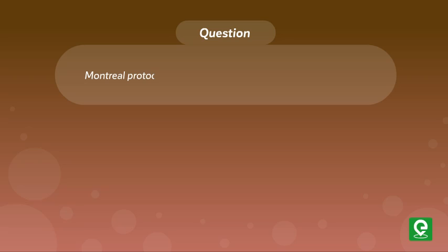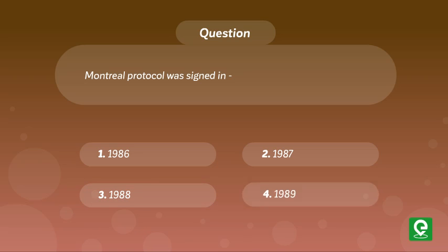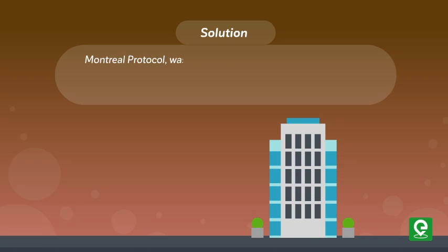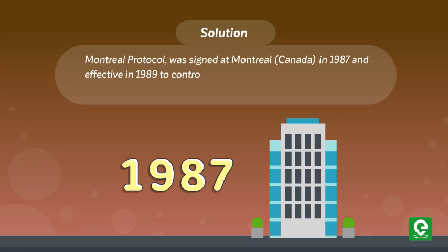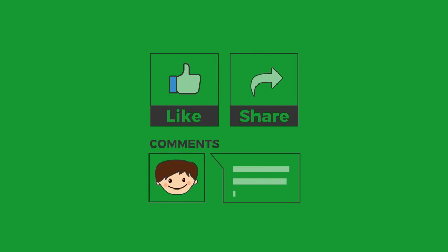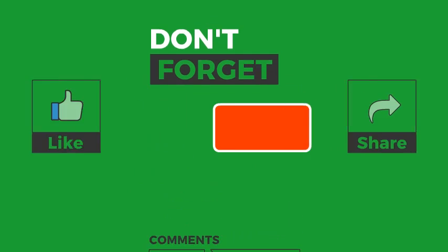Question: Montreal Protocol was signed in 1986, 1987, 1988, 1989. This question was asked in AIIMS 2015. Solution: Montreal Protocol was signed at Montreal, Canada in 1987 and became effective in 1989 to control the emission of ozone depleting substances. Hence, option 2 is correct.